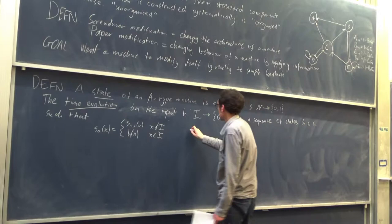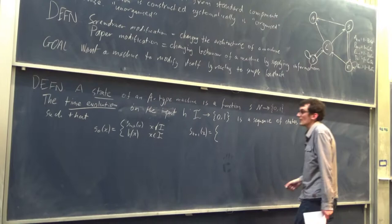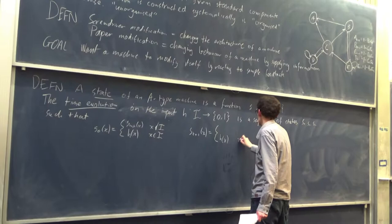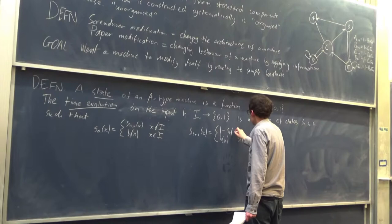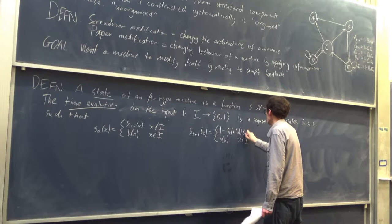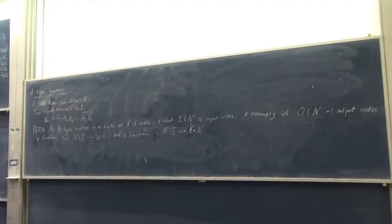The way the state evolves over time: if we're in the input nodes, it's always going to be H — that's fixed. Otherwise we do this NAND: it's 1 minus S(T, I1(X)) times S(T, I2(X)), where I1 and I2 are the projections onto the first and second components of the wiring function I.